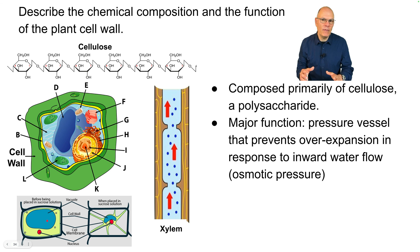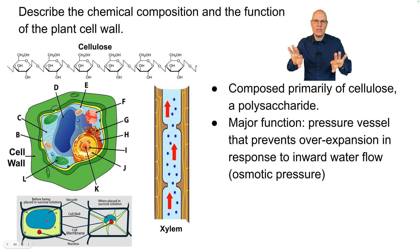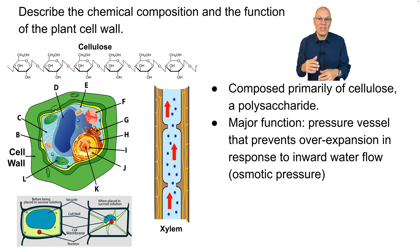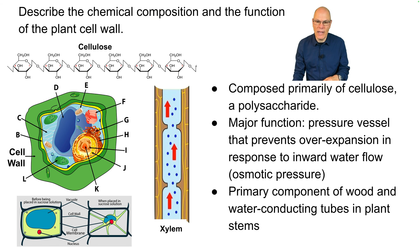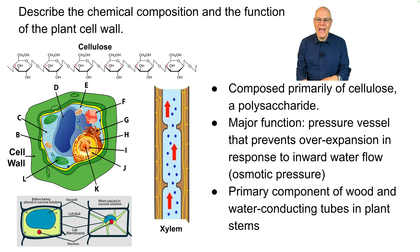The cell will be full of water, and that water pushes against the cell wall, keeping the plant cell full and firm and avoiding wilting — that's a good thing for the plant. And the cell wall is the primary component of wood and the water-conducting tubes in plant stems.